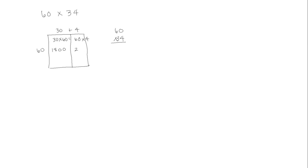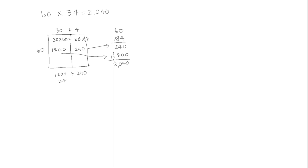6 times 4 is 24 tens. So now we're going to record these partial products in our standard algorithm and add them together. We get a total product of 2,040, just as we would if we added together the two areas. What we record in the standard algorithm comes directly off the area model.